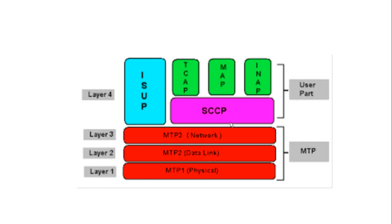From the SMSC's point of view, message delivery uses an M3UA connection over SS7, involving protocols like SCCP, TCAP, and MAP. These protocols are required for communicating with the VLR or HLR to deliver an SMS. I will provide a detailed description of these protocols in upcoming videos.